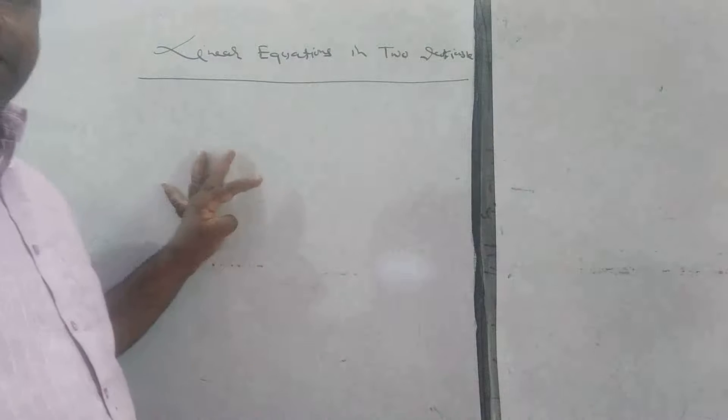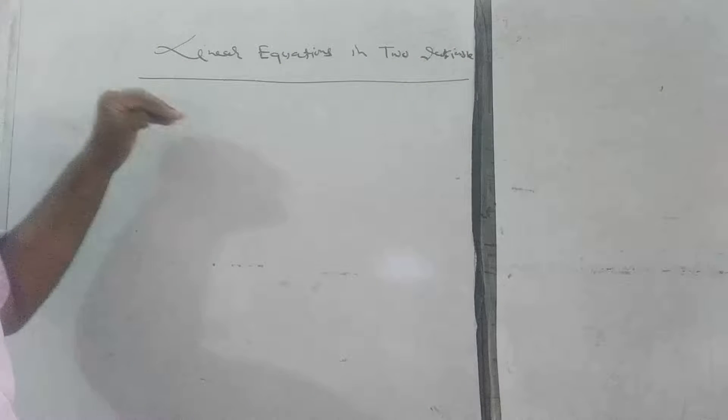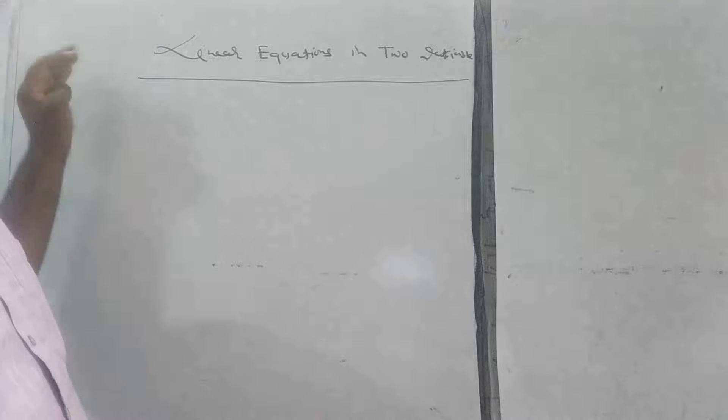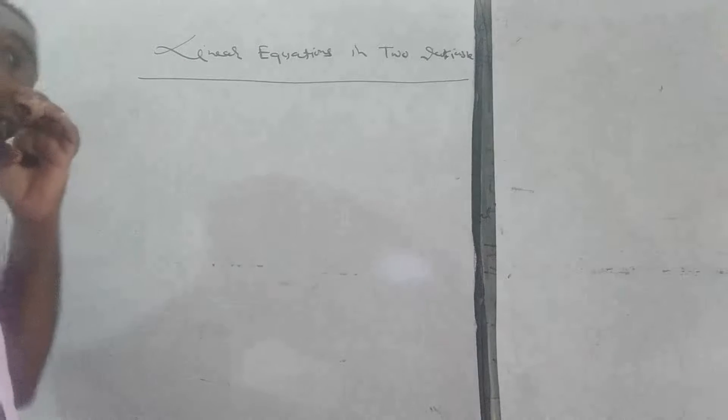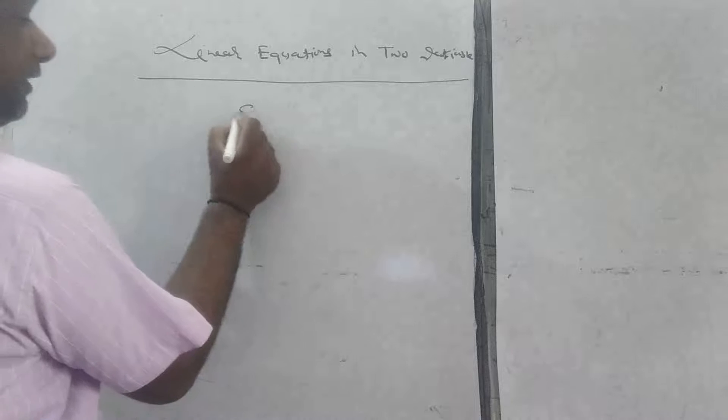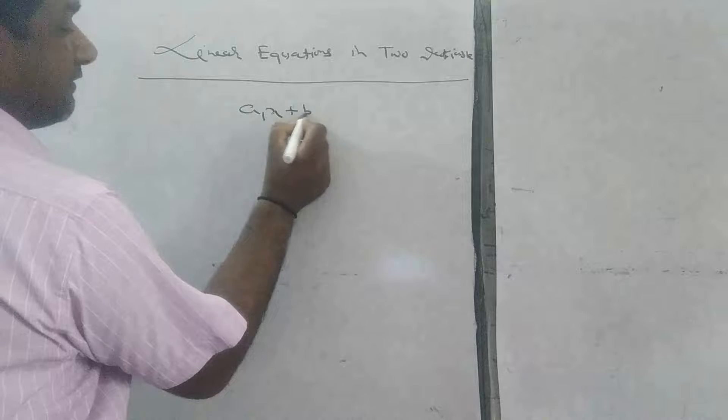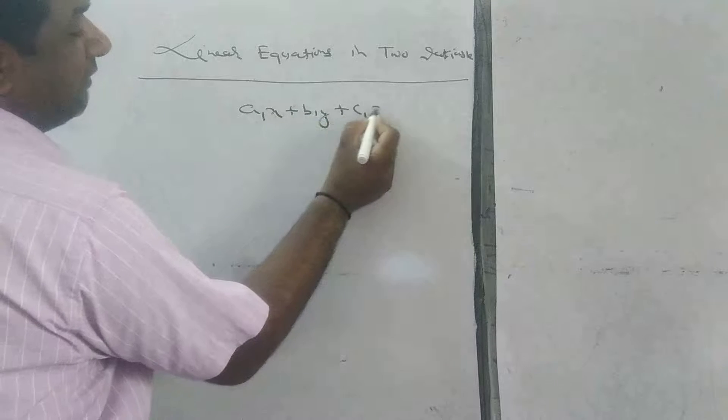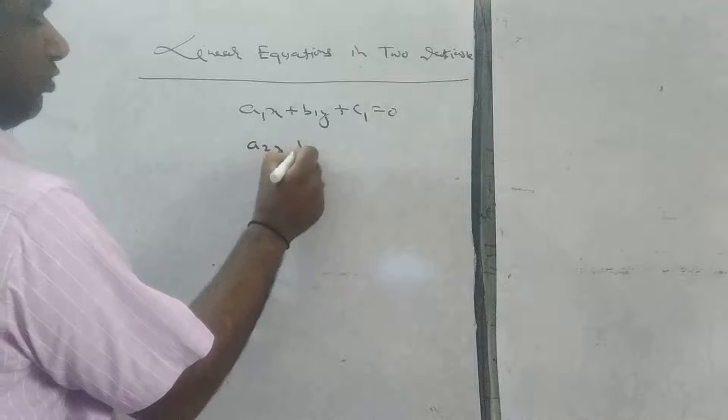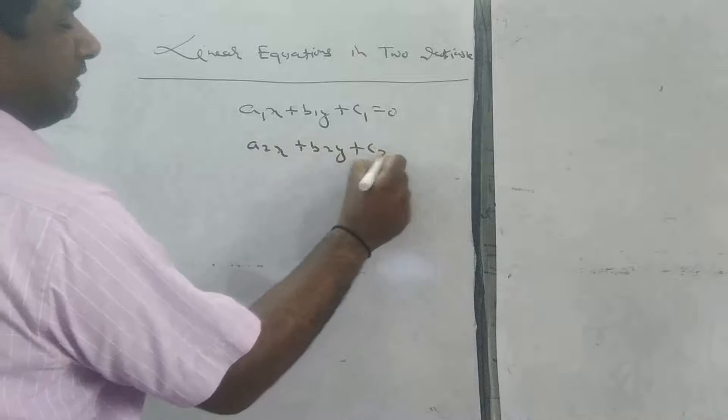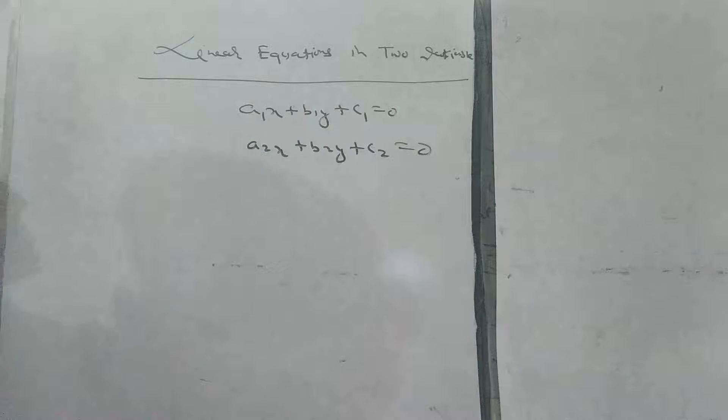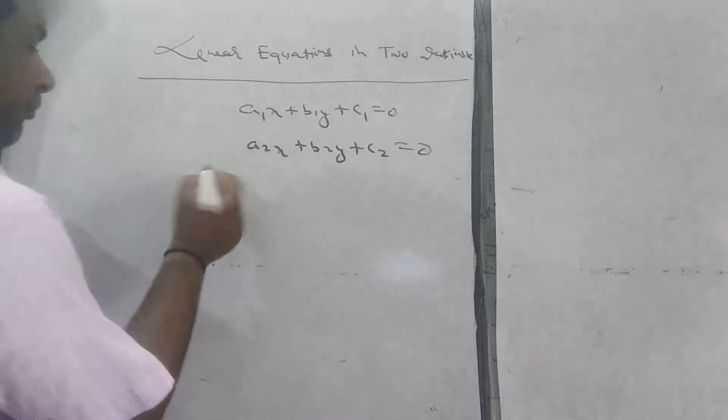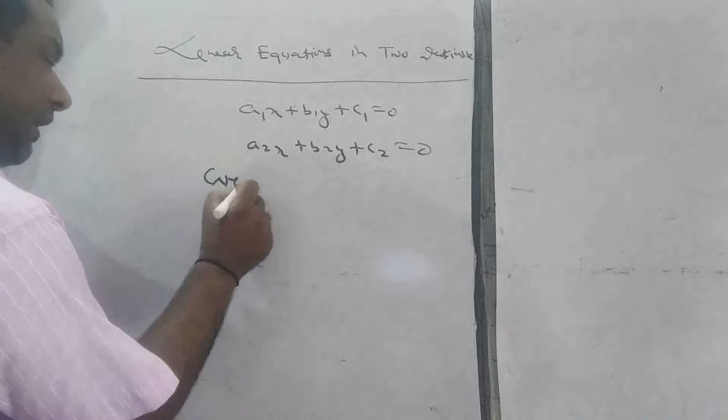In this chapter, two simultaneous linear equations are given in two variables to solve. The standard equations are a1x plus b1y plus c1 equals 0, and a2x plus b2y plus c2 equals 0. Two simultaneous linear equations are always given in every question and we have to solve them.